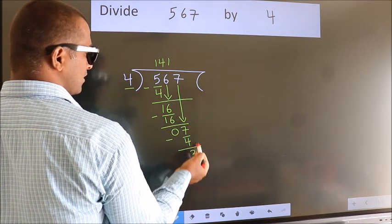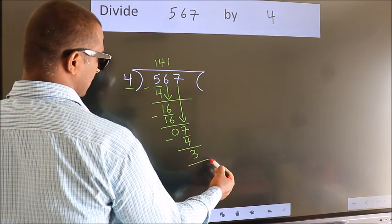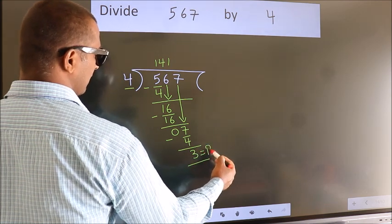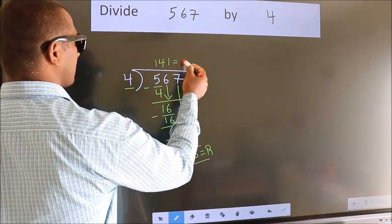No more numbers to bring it down. So we stop here. This is our remainder. This is our quotient.